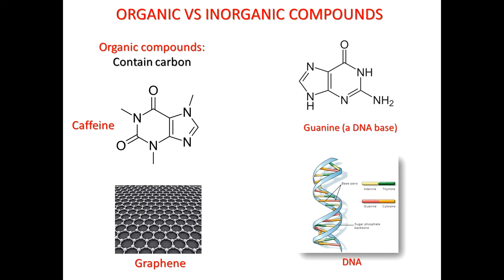On the top right we've got guanine, which looks similar to caffeine but is very different — it's actually a DNA base. This molecule is one of the molecules found right in the middle of DNA. DNA is essentially the information carrier in our bodies, allowing life to happen and allowing us to maintain life. The importance of guanine cannot be overemphasized. These are organic molecules — very, very interesting and important.